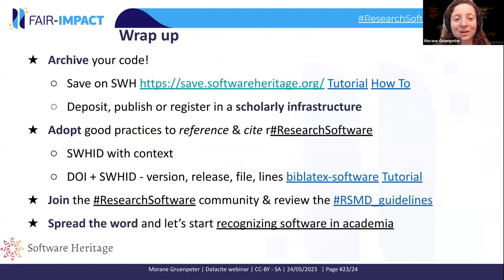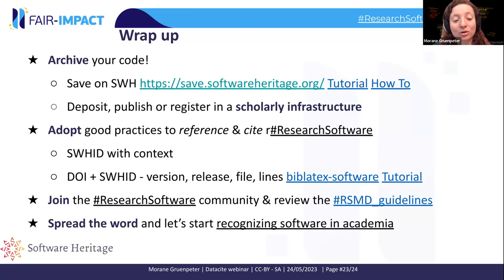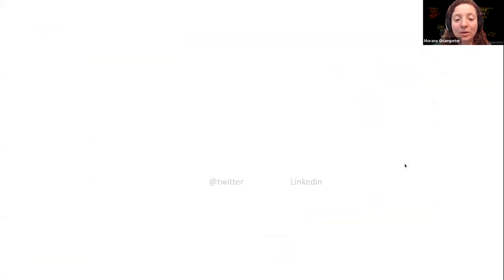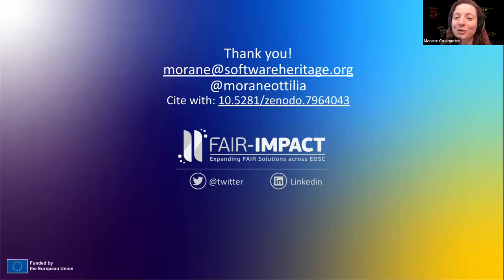To wrap up: we want to make software a first-class output. To do that, we need to archive the code, adopt good practices to reference and cite research software, join the research software community, review the RSMD guidelines, and spread the word to begin to recognize software in academia. Thank you for having me and for staying tuned for the next presentations.